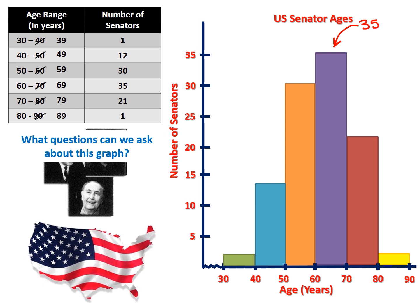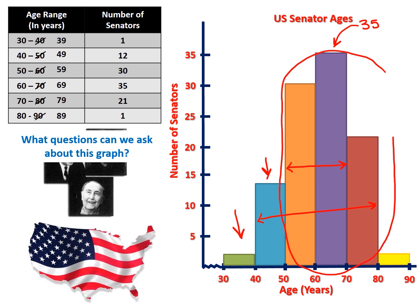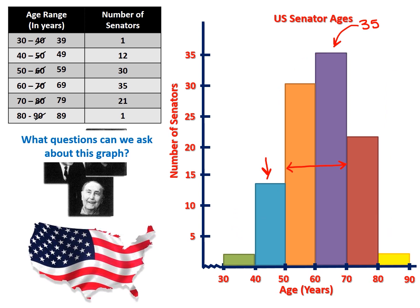We can see that most senators are between the ages of 40 and 80, and more specifically between 50 and 70. Why are there fewer people between 30 and 40, or 40 and 50? Between the ages of 30 and 50, many people are raising children. Being in the Senate means going to Washington D.C., which could mean relocating your family or being away from them, so people in that age range may not want to do that.